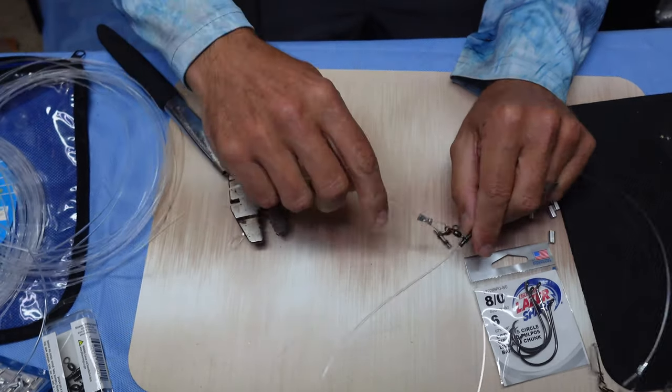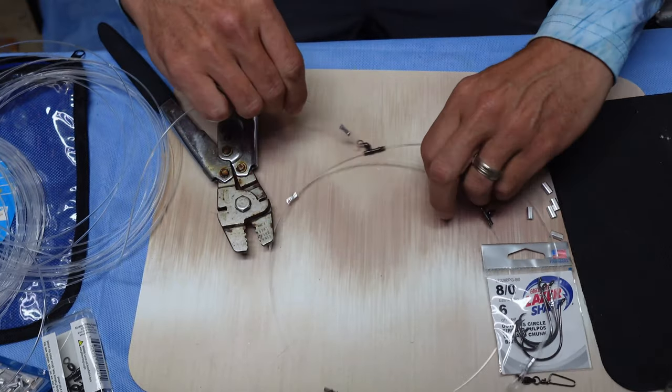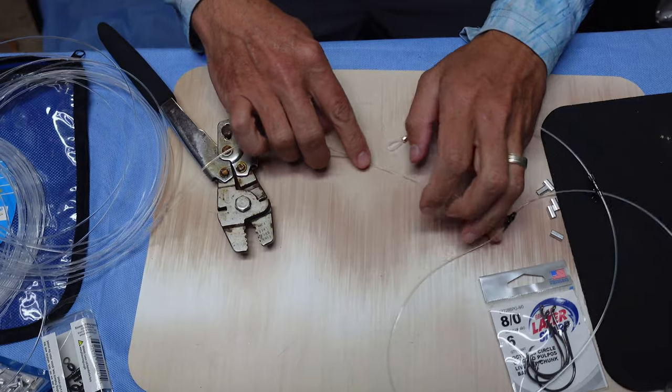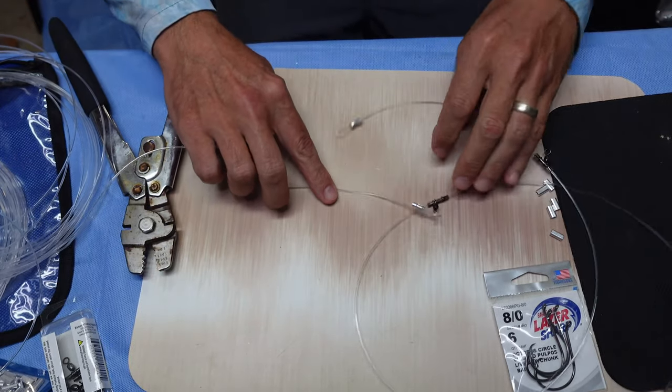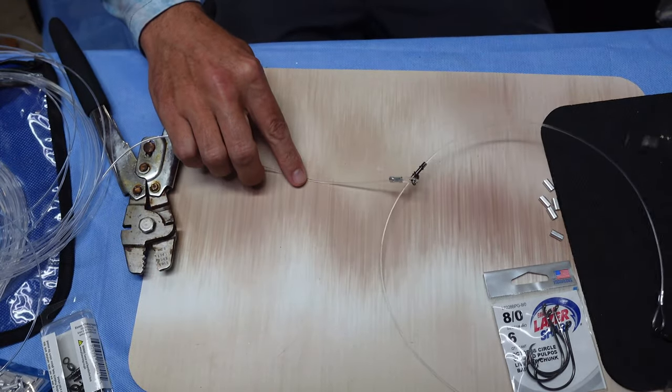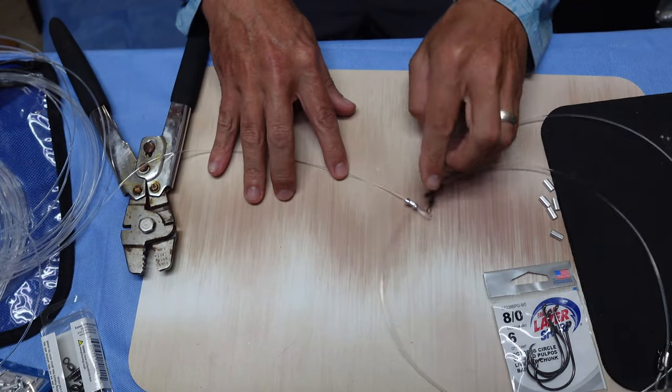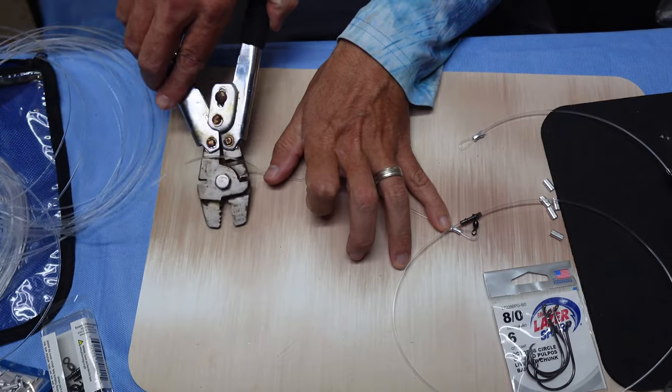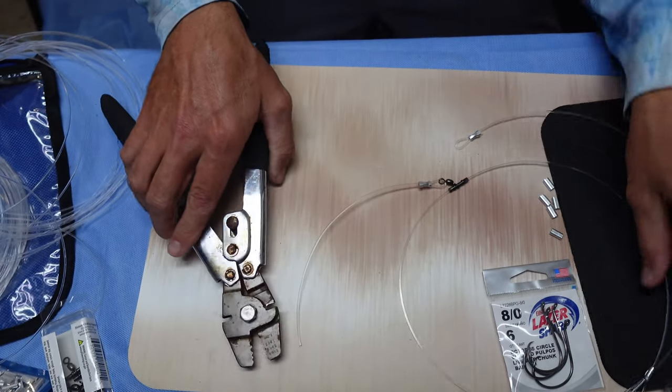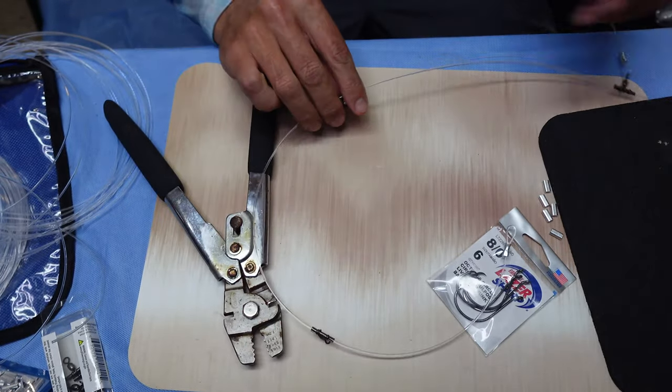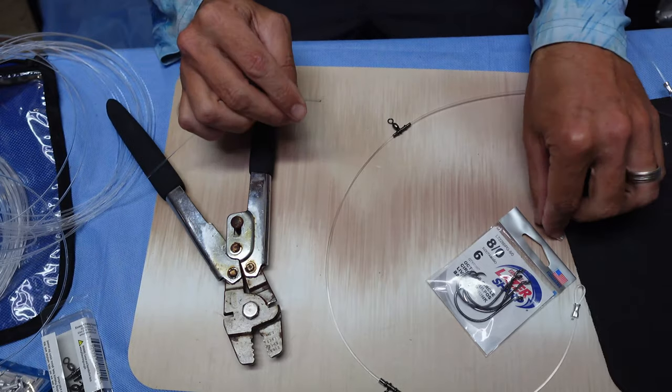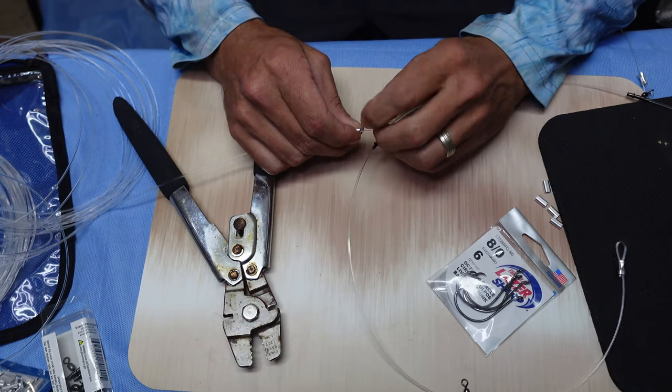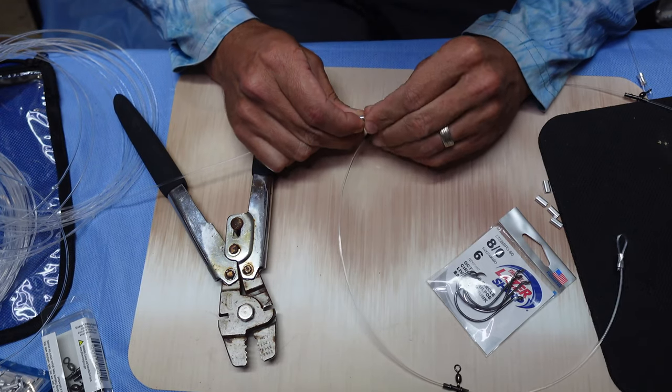My length is going to be the same length apart. I'm going to use the same measurement as I did to space out my swivel sleeves. So you don't want them to be too long because then they run the chance of getting hung up on each other. So I'm going to do all of my branch lines first and then I'll go ahead and attach the hooks and I'll tell you a couple stories about why I do what I do.